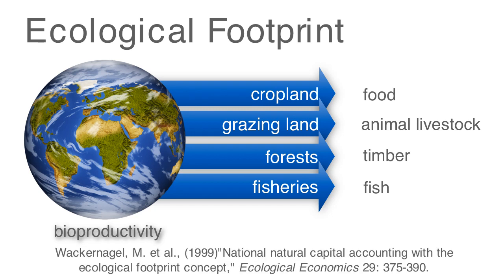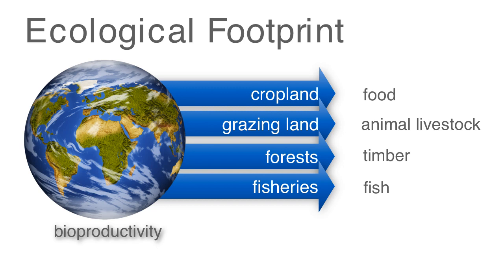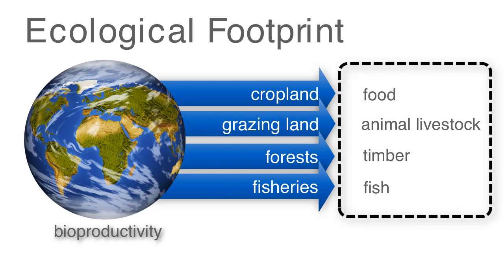A group of researchers developed a new method to compute the carrying capacity of the earth called the ecological footprint. In this method, the earth is divided into types of bioproductive land. The image depicted here shows the annual bioproductive flows, with arrows indicating the flow of Earth's primary products from cropland, forests, grazing land, and fisheries.